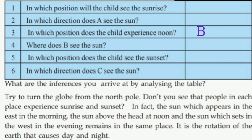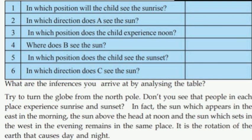Child at B experiences noon. In which position does the child see the sunset? Child at C — in which direction does C see the sun?